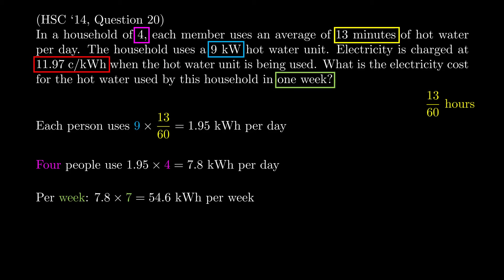And finally, to know what the cost is, well it's being charged at a rate of 11.97 cents per kilowatt-hour. We've got 54.6 kilowatt-hours, so you want to think of it as each of those kilowatt-hours costs 0.1197 dollars, just turning the cents to dollars. For the total cost we multiply 54.6 by that amount and we get a total of six dollars and 54 cents.